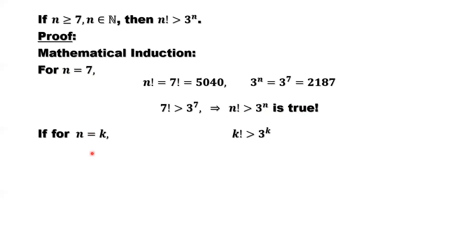In the second step, if we assume n equals k, this result is true. That means k factorial is bigger than 3 to the power k. We are assuming if this is true.